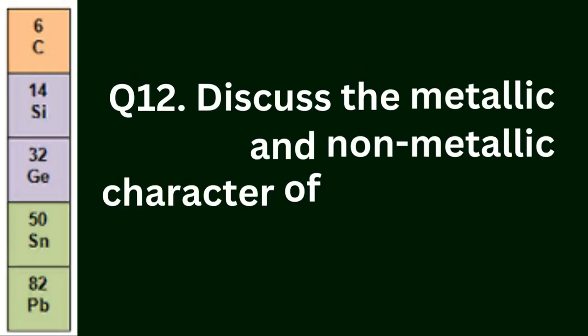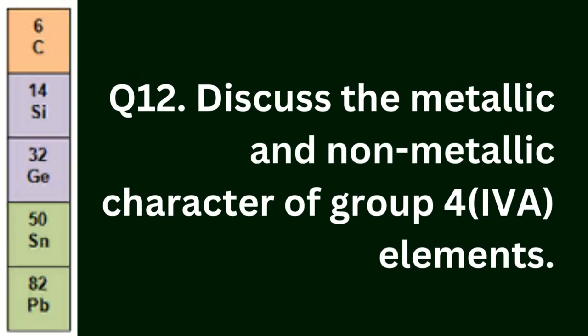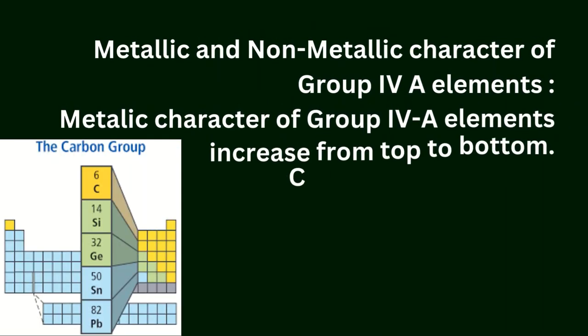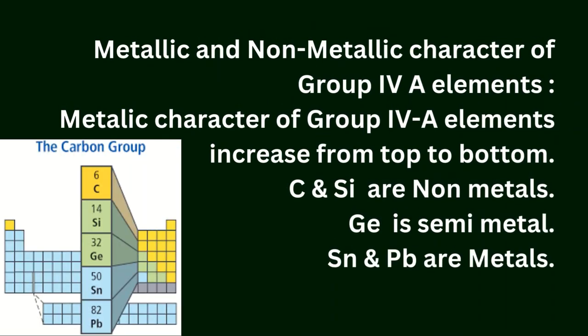Question 12: Discuss the metallic and non-metallic character of group 4A elements. Metallic character of group 4A elements increases from top to bottom. Carbon and silicon are non-metals. Germanium is a semi-metal. Tin and lead are metals.